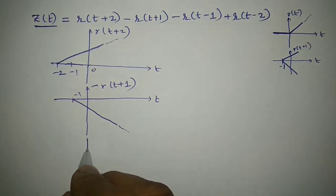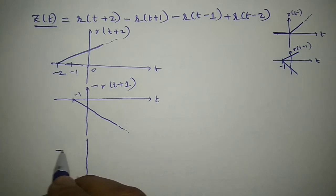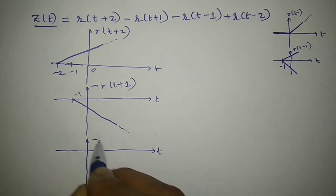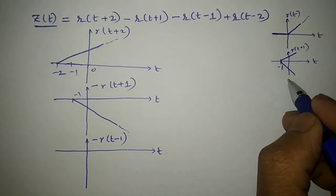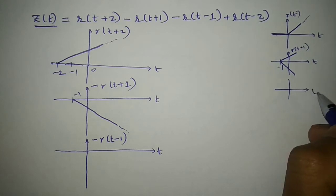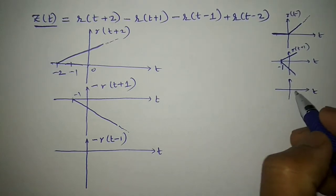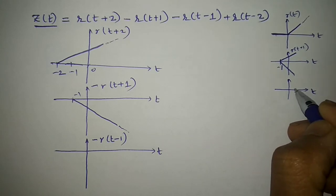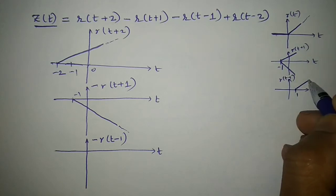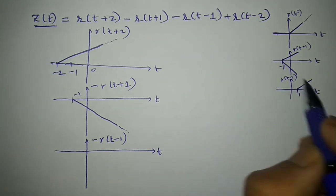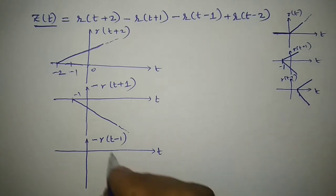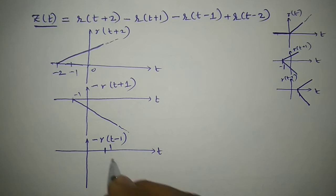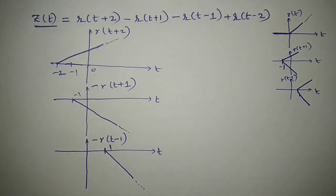Now I need to sketch the third signal, minus R(t-1). To sketch that, consider R(t-1): t minus 1 means the signal is shifted to the right by 1. For minus R(t-1), the amplitude gets reversed. So that is what I need to draw at position 1. This is what minus R(t-1) looks like.